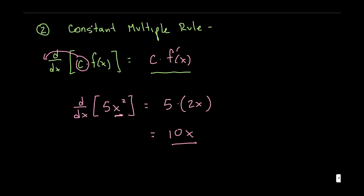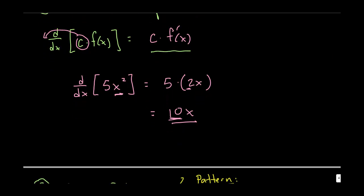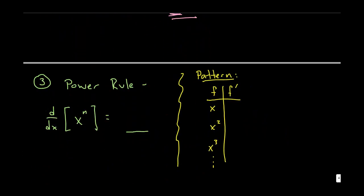For instance with the constant multiple rule, if you know it's going to, if this two is going to come down and become the coefficient, you can go ahead and combine the two and the five and just call it 10x. You don't actually have to write down every intermediate step. But make sure to write down plenty enough to where your instructor can follow your work.